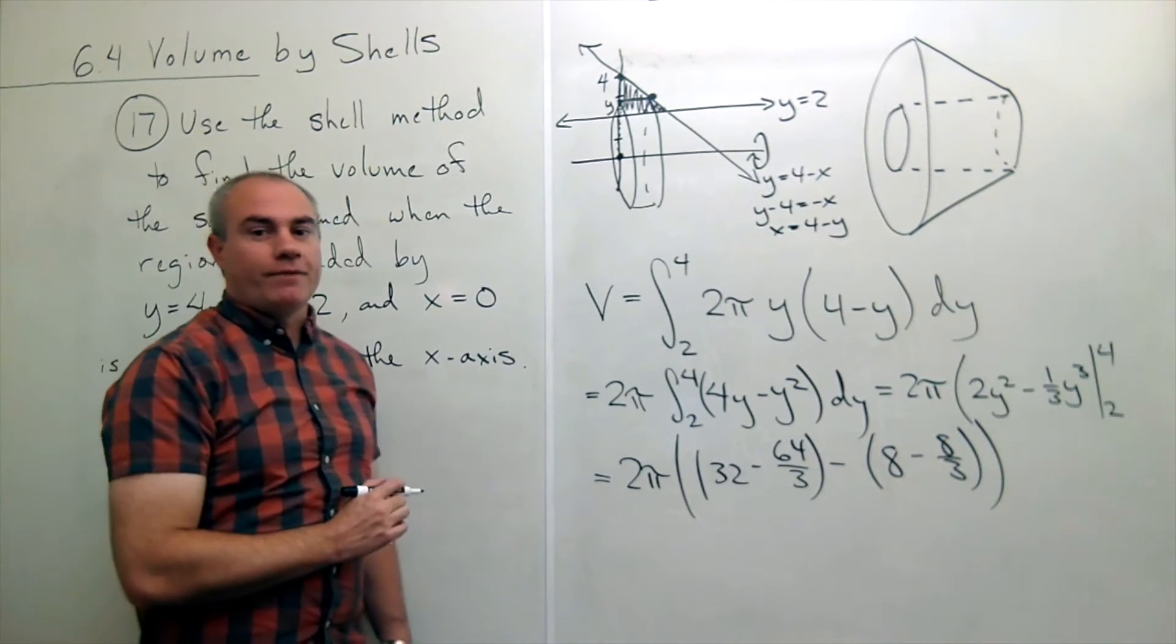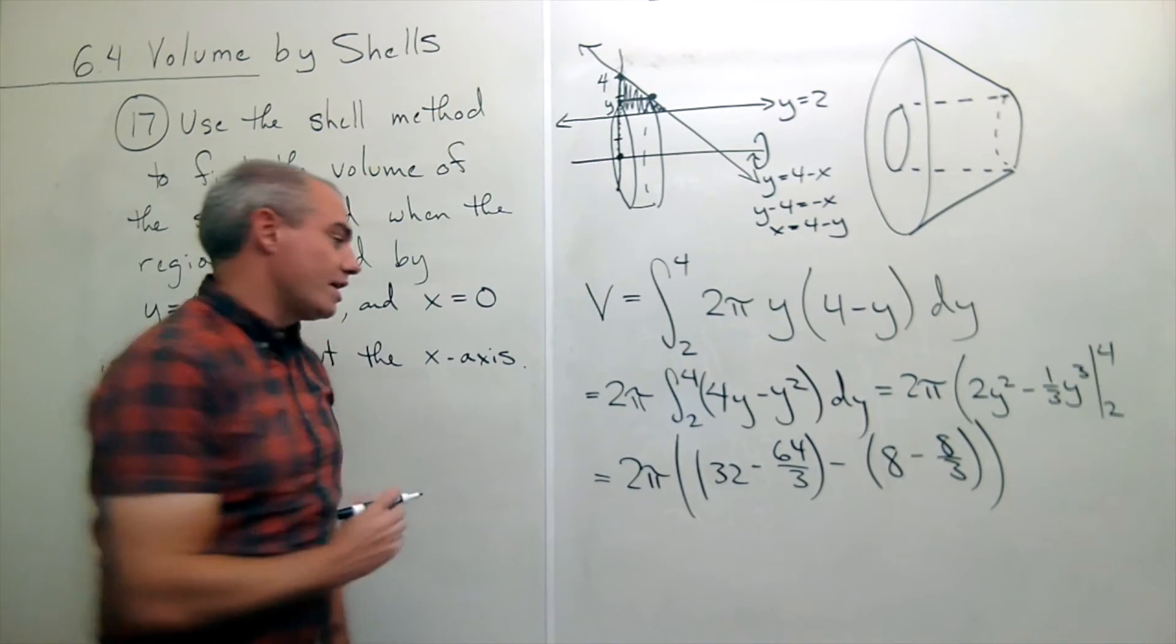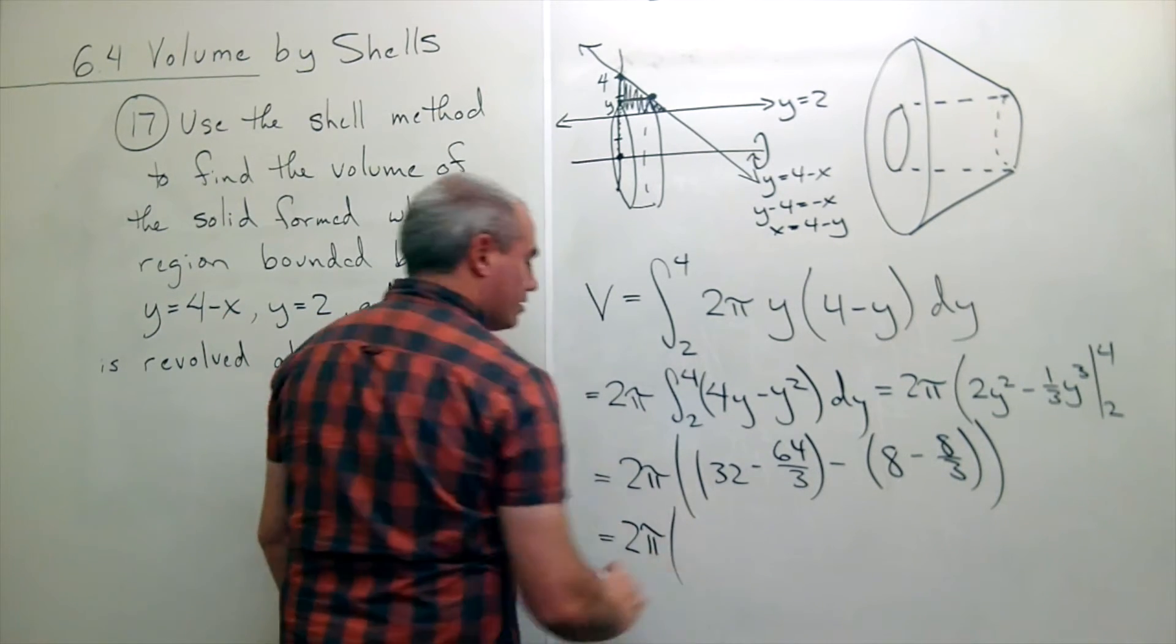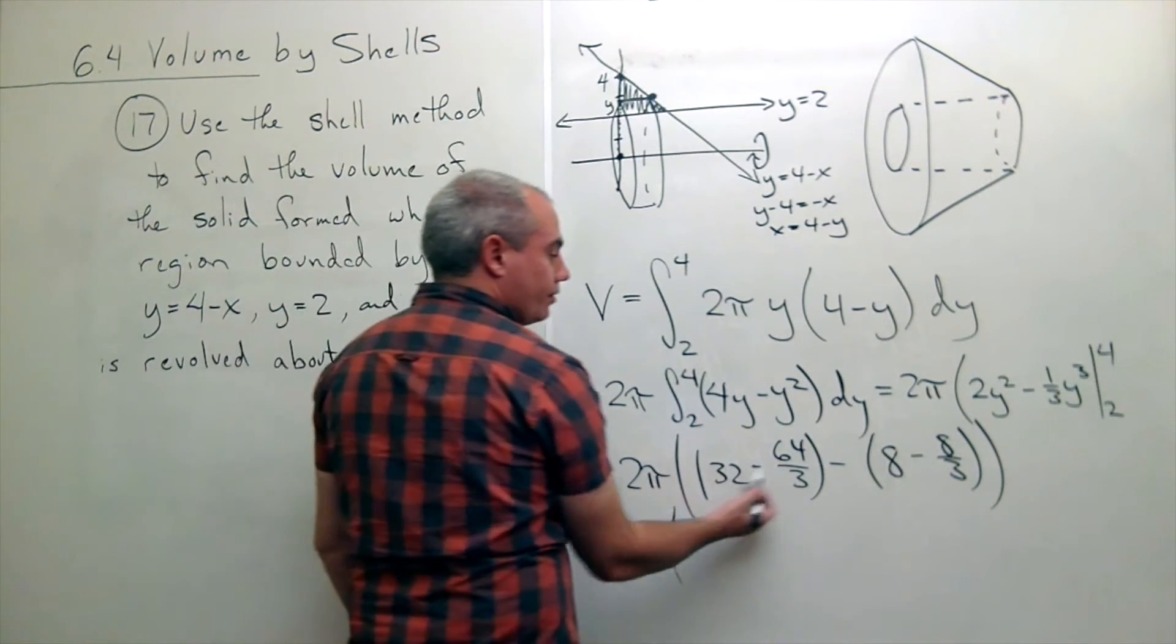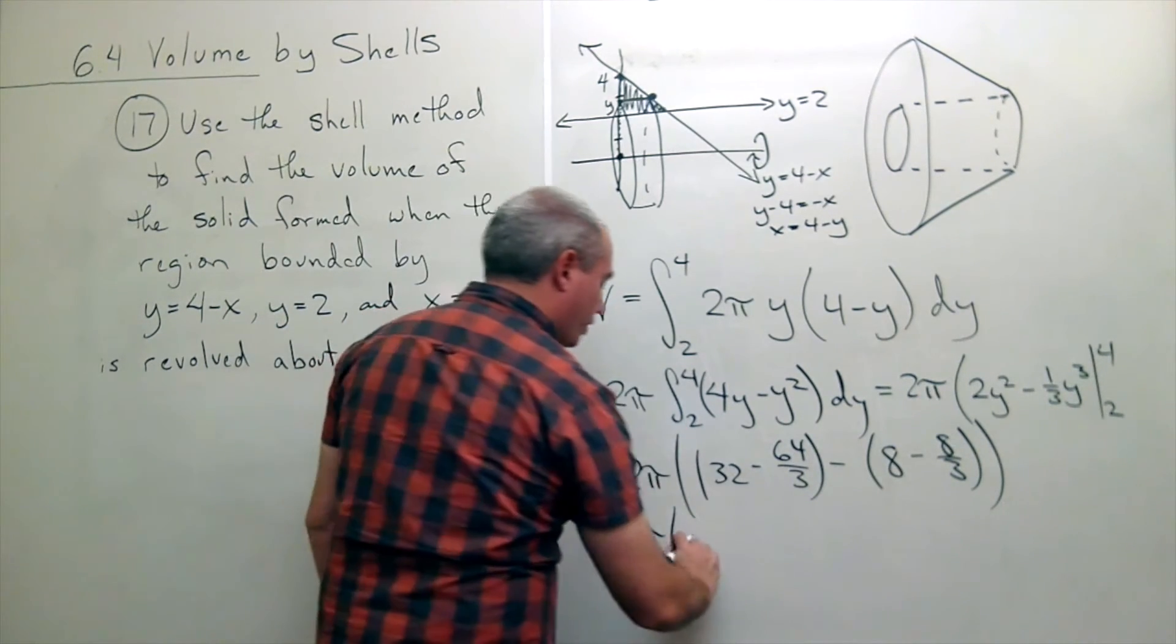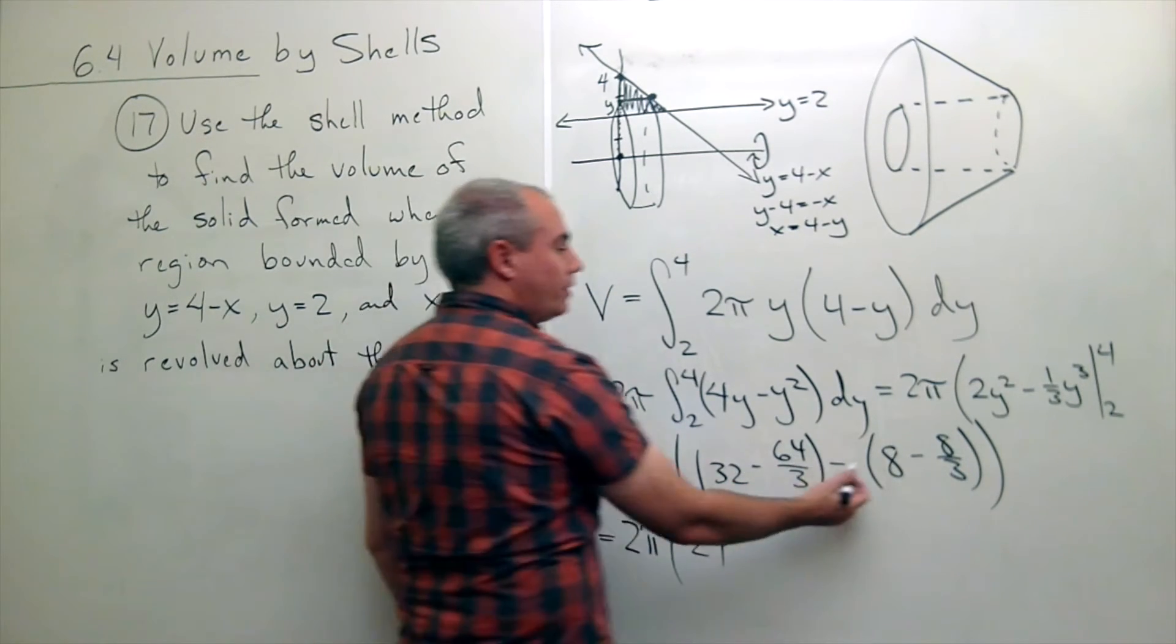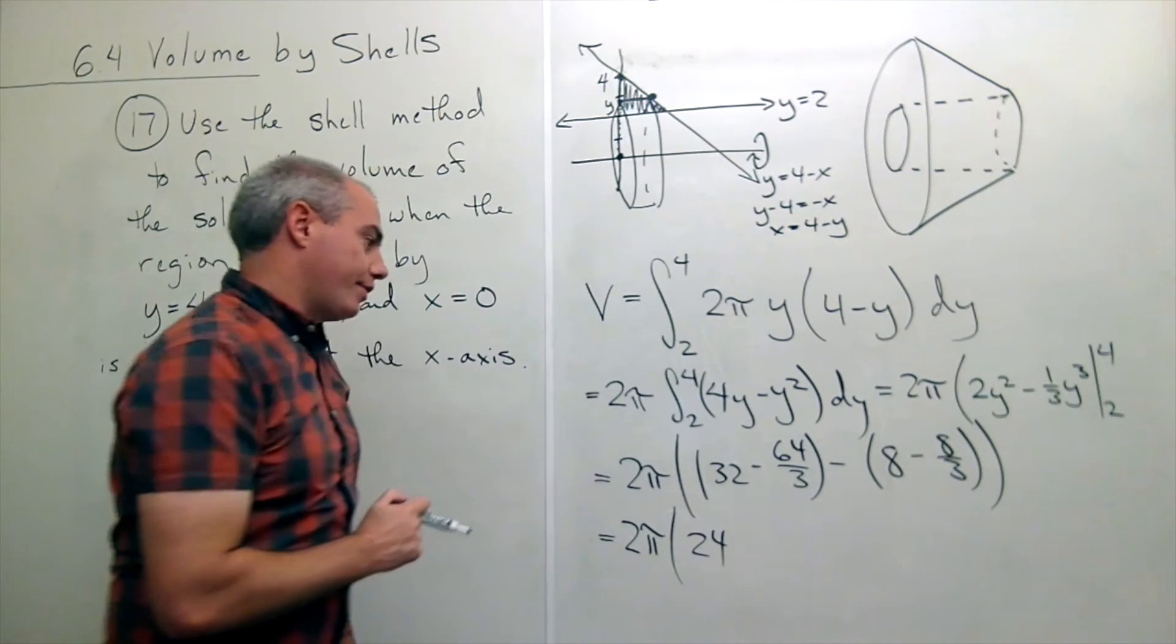Now we just need to simplify this down a little bit and we'll be done. I get two pi times. I get thirty-two minus eight. That's twenty-four.